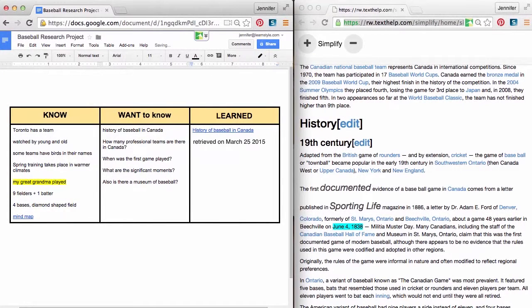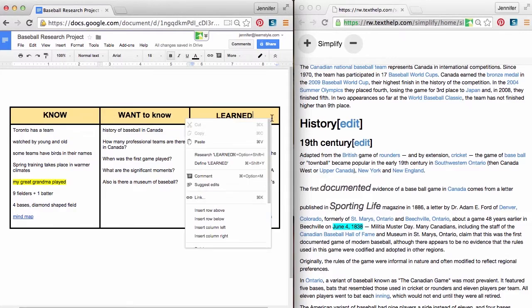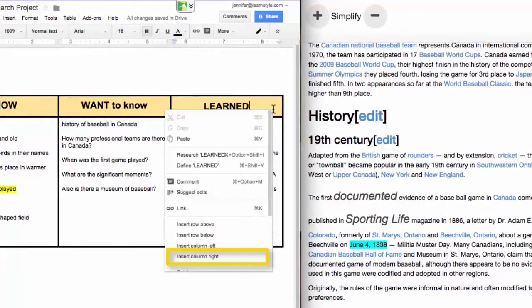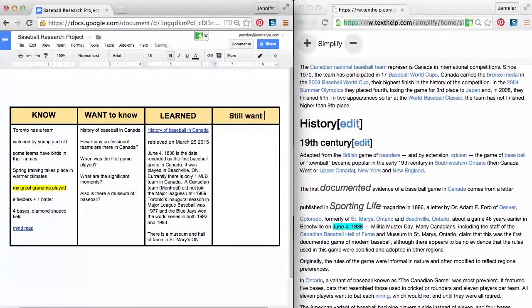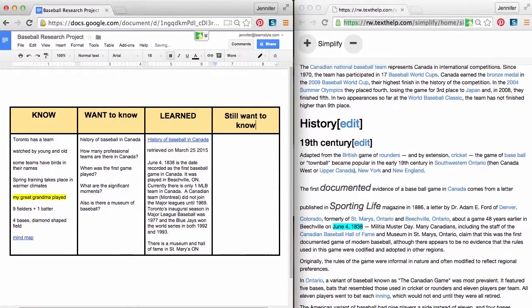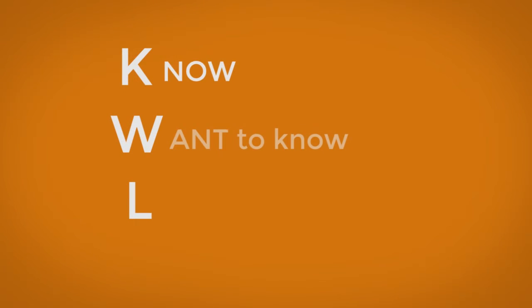Record the date retrieved and type a summary of your findings from that source. If you like, right-click with your cursor in the column and select Insert Column Right. Add the title Still Want to Know. Continue your research using a variety of sources. Let's recap: the KWL chart helps bring order to your research by organizing what you know, want to know, and learned about a topic.